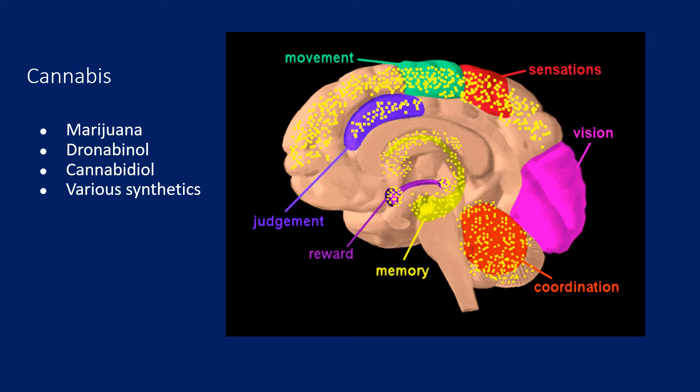Now, more and more popular nowadays is cannabis, especially as it becomes legal recreationally. It was recently legalized recreationally in New Jersey. This includes marijuana, its derivatives such as dronabinol and cannabidiol, as well as synthetic cannabinoids. What most people don't realize is that cannabis really acts on all these different areas of the brain and produces a wide variety of effects. We're seeing more and more of it as it becomes more legal.